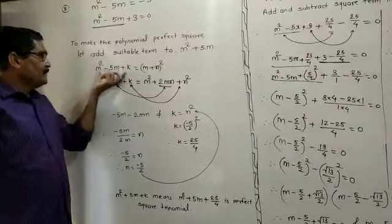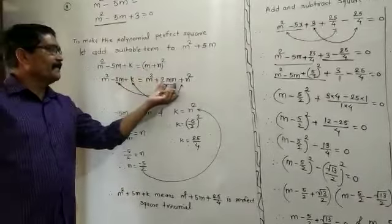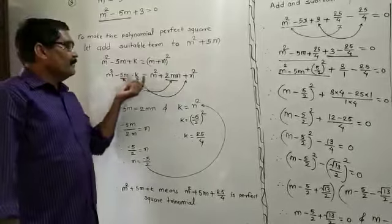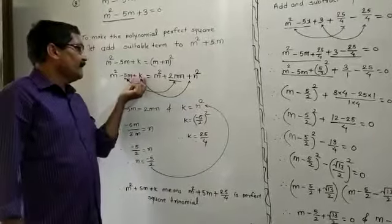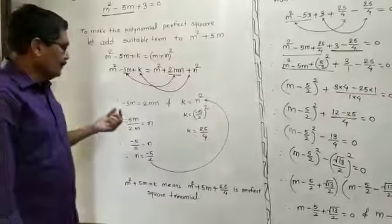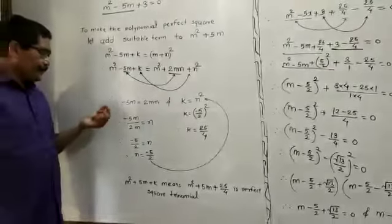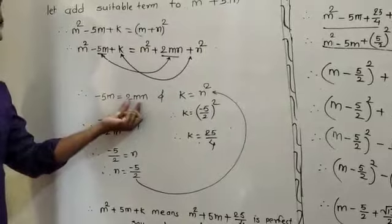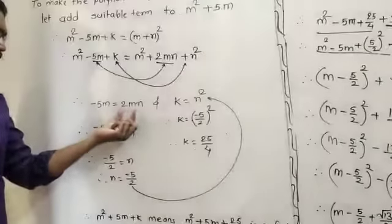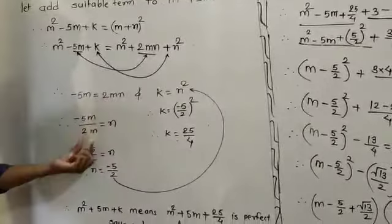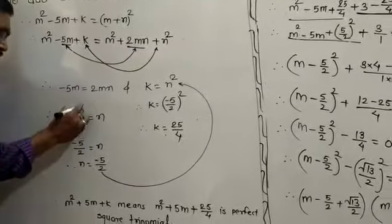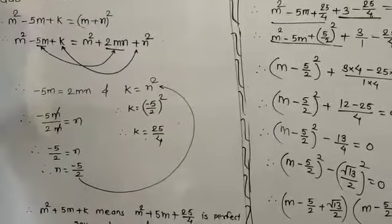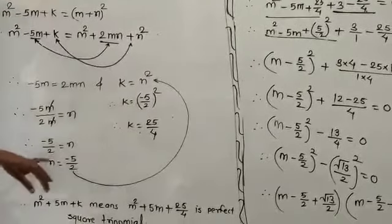You have to write this as it is and expand it as m squared minus 2mn plus n squared. Equate the terms: the m terms with m and the terms of k with n squared. So minus 5m equals 2mn. Dividing both sides by 2m, you get n equals minus 5 upon 2.